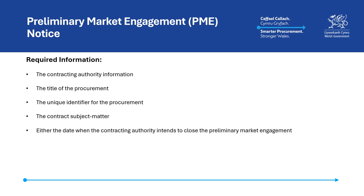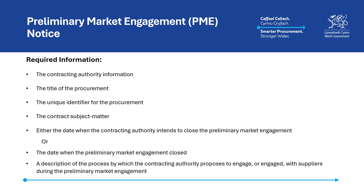In situations where a contracting authority has opted to use this notice to invite suppliers to participate in any preliminary market engagement, this notice must include the date that the authority intends to close the engagement. Or, in situations where the contracting authority has already conducted preliminary market engagement, authorities must also include the date the engagement closed. Authorities will also be required to provide the market with a brief description of the process used for any engagement. This should include, for example, the date and time of any planned events, and any periods for submission of expressions of interest and information by suppliers.